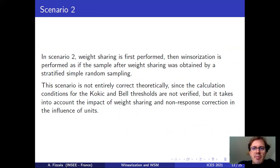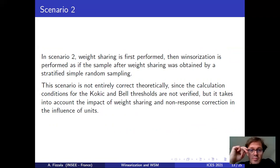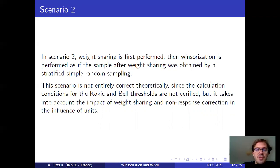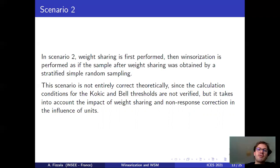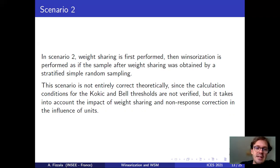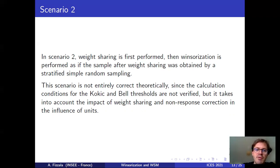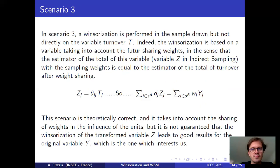In scenario two, the weight sharing is performed first, and then Winsorization is performed as if the sample after weight sharing was obtained by a stratified simple random sampling. This is very easy to implement because we don't have to modify the computer programs, but the calculation conditions for the Cutoff-Bell threshold are not verified. However, this scenario does take into account the impact of weight sharing and non-response correction on influential units.